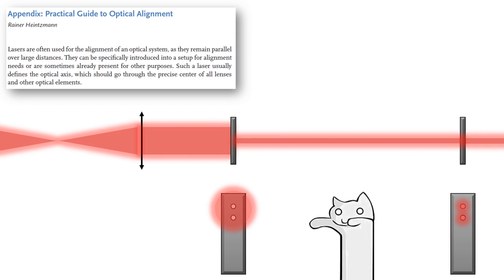Collimated light is necessary for a lot of applications, and so is beam expansion. It's definitely worth having either a shear plate or some other good method to check collimation. See you next time.